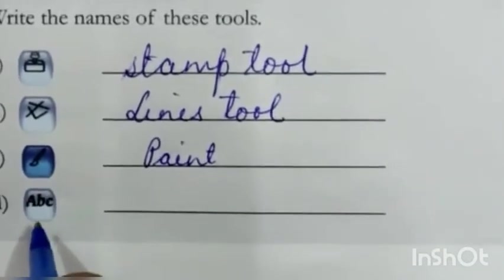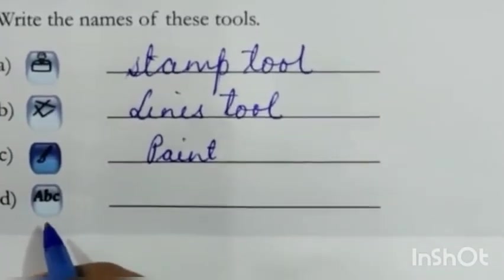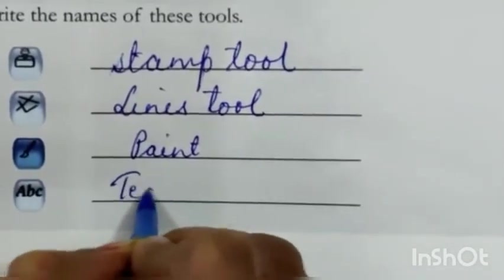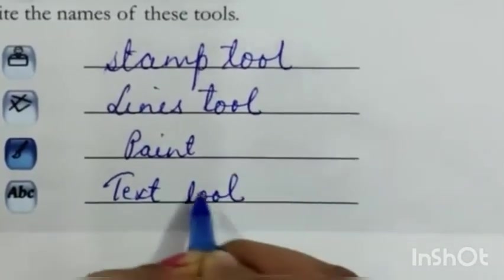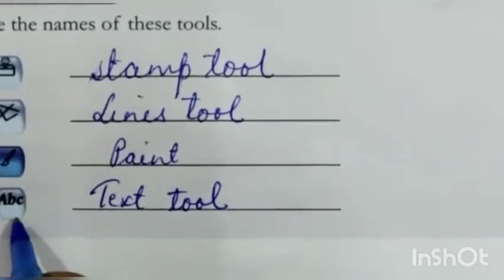And next one - A, B, C. You can already tell by looking. This is text tool. Text means writing something. We use text tool to write.